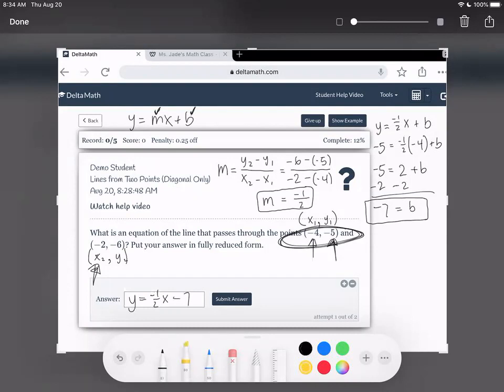So let me just highlight again. Highlight again our m ends up here. And then our b, which we found to be negative 7, that ends up over here. Any questions on this one?